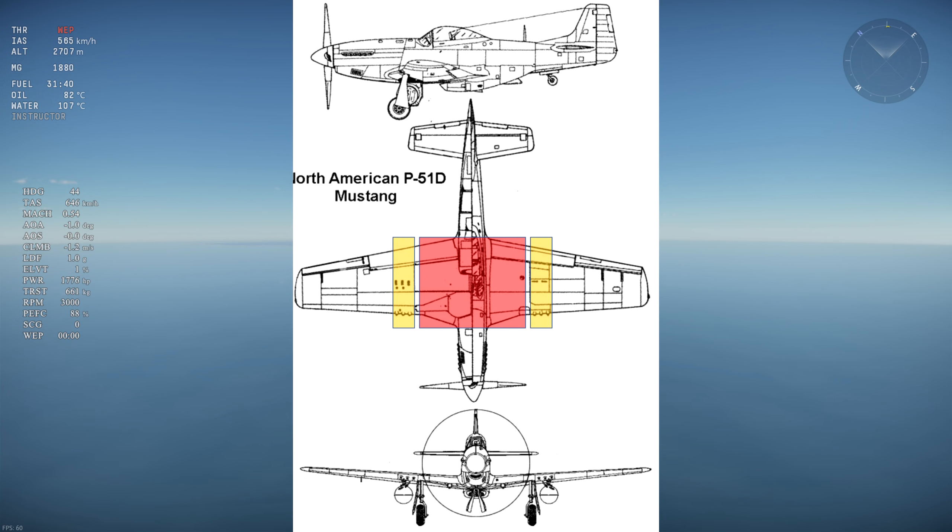Then, we have the gun ports with the associated protrusions, which makes laminar flow doubtful directly behind the gun ports. Optimistically, we are left with 50% of the wing area that can benefit from laminar flow.